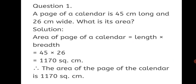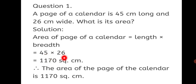Solution. Area of page of a calendar is equal to length into breadth, which is the formula for area of a rectangle. Length is 45 and breadth is 26. 45 into 26 gives us 1170 square cm. Therefore, the area of the page of the calendar is 1170 square cm.